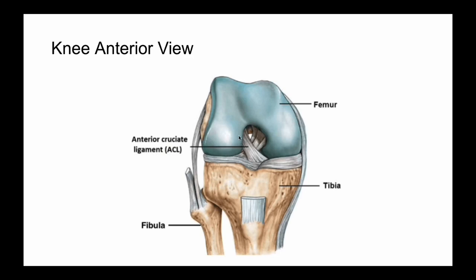Moving to the interior of the knee, we see the ACL projected toward the viewer and the PCL behind it. The ACL's primary function is to prevent anterior translation of the tibia — preventing the tibia from sliding forward relative to the femur. The ACL originates on the inner posterior surface of the lateral femoral condyle and travels anteriorly to its insertion on the anterior tibial plateau, such that when anterior translation is attempted — as in a Lachman or anterior drawer test — the ACL is pulled taut.